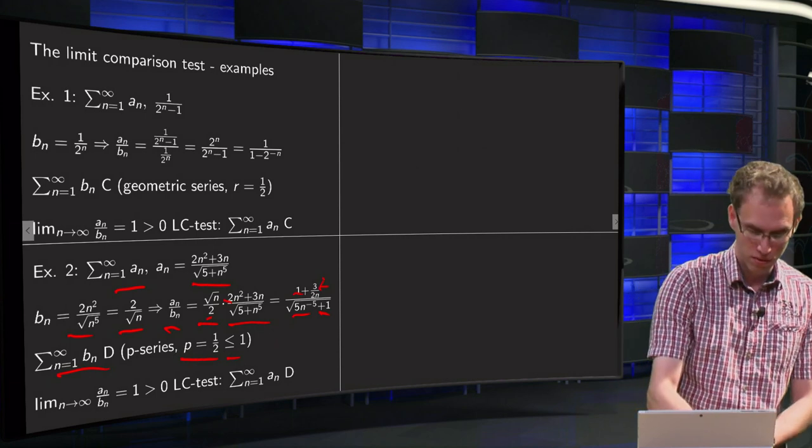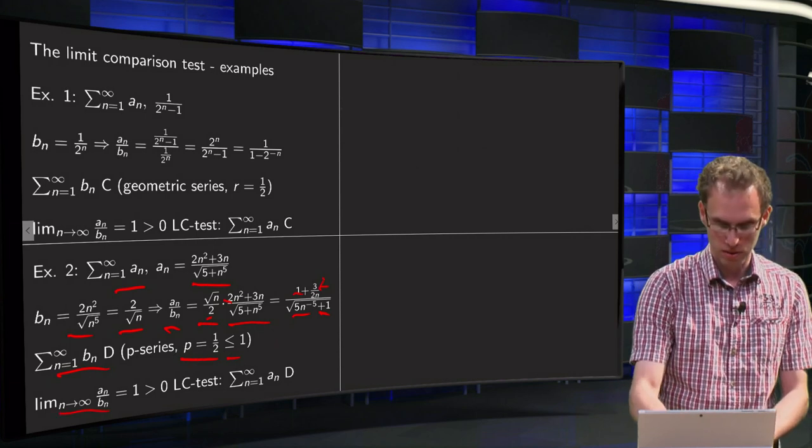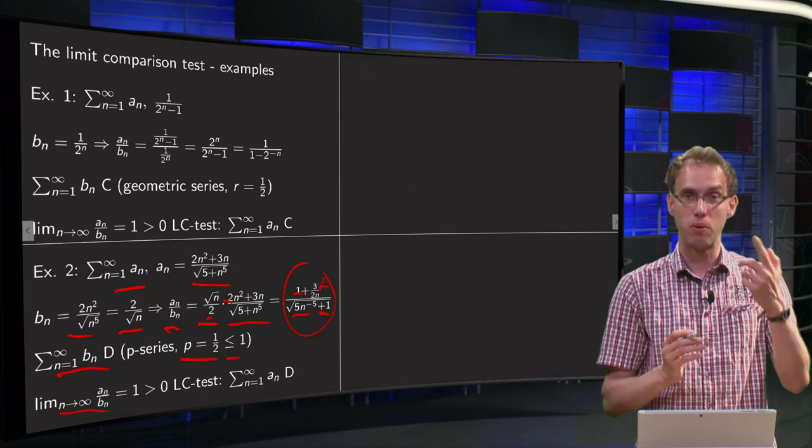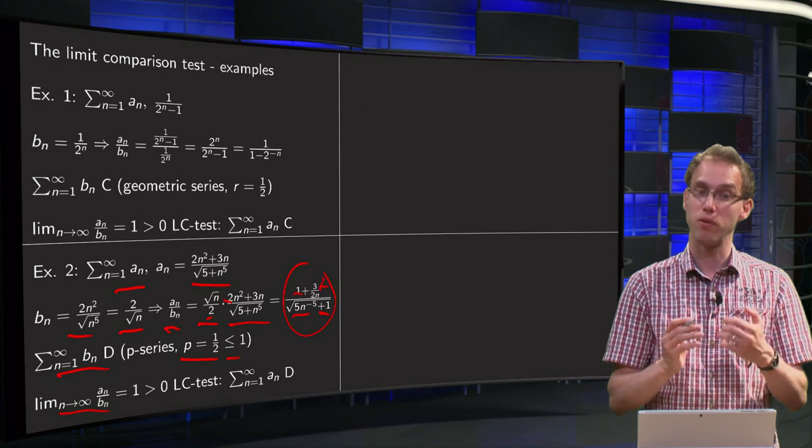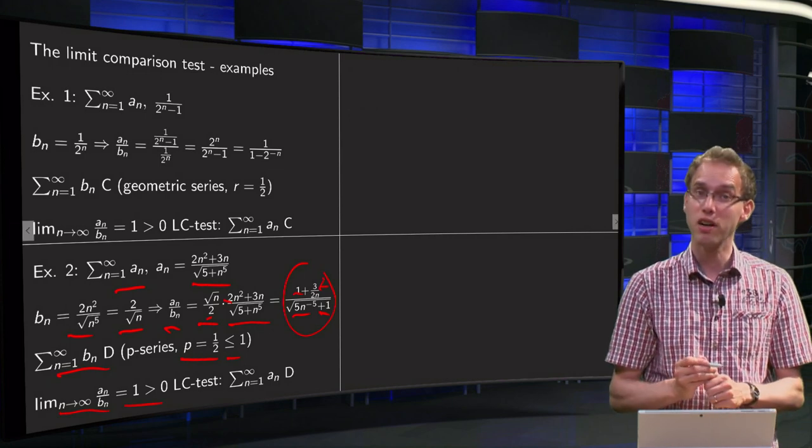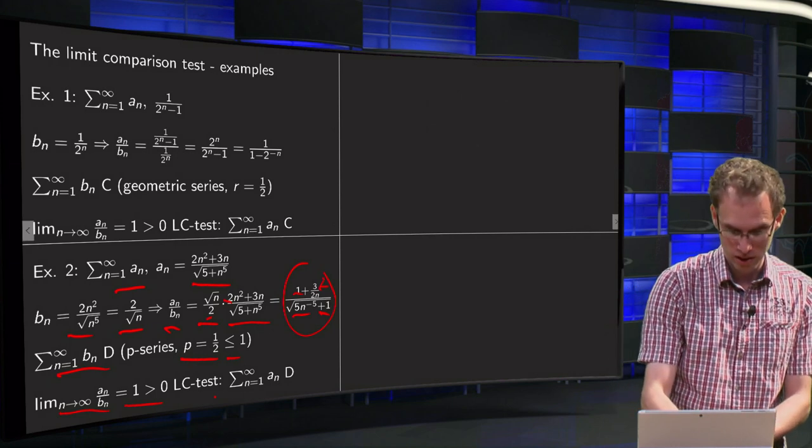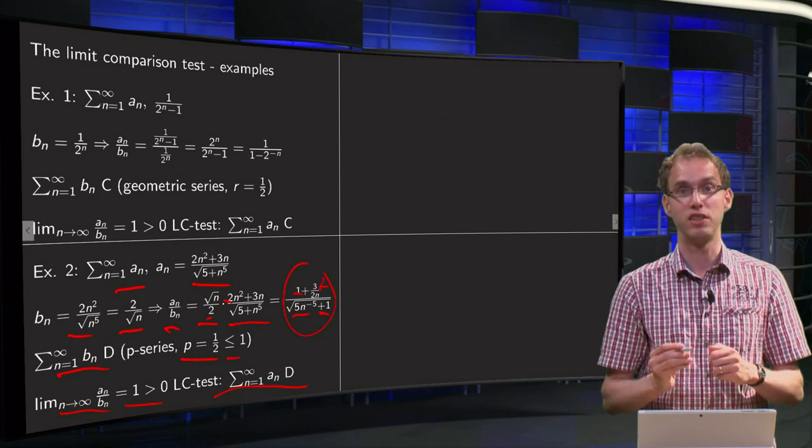Now if we take the limit n to infinity an over bn, so the limit of this expression over here, everything cancels out except for the 1 and the square root of 1, so we get a 1, which is bigger than 0, so we can apply our limit comparison test.